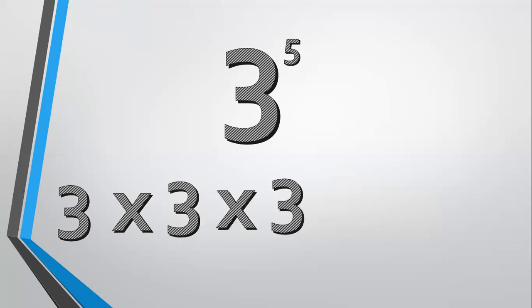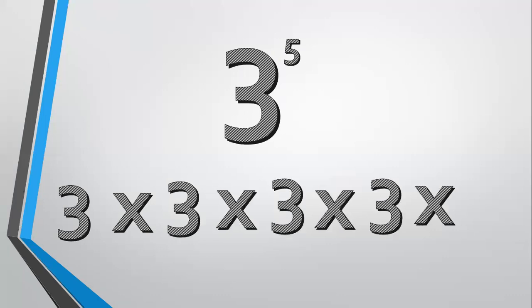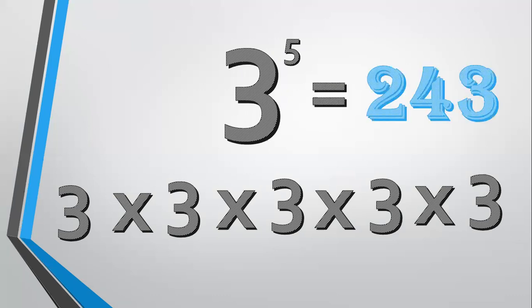3 to the fifth power means 3 times 3 times 3 times 3 times 3, which equals 243.